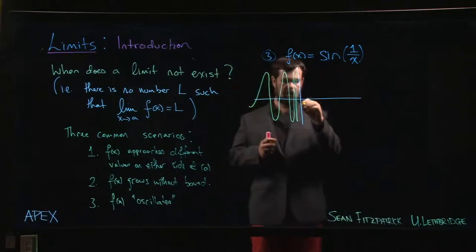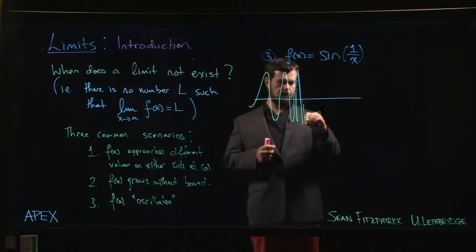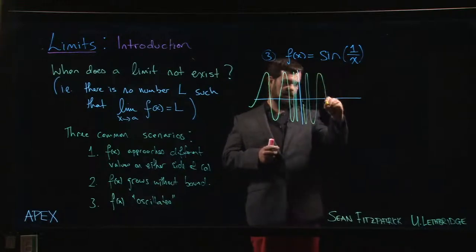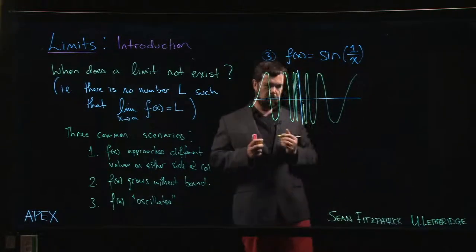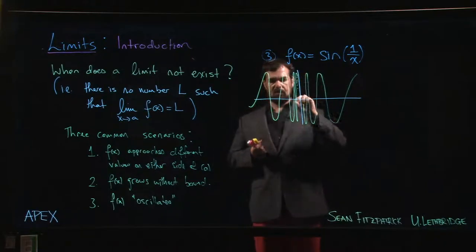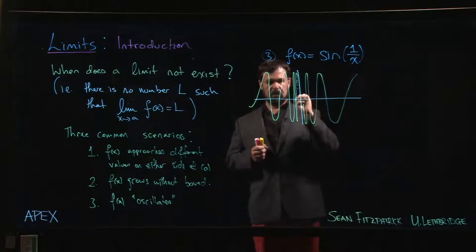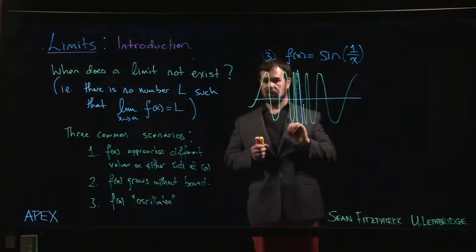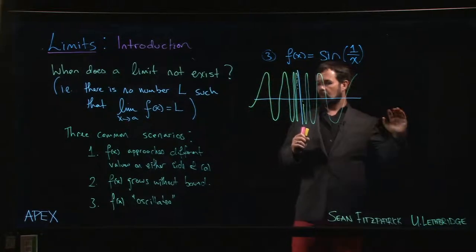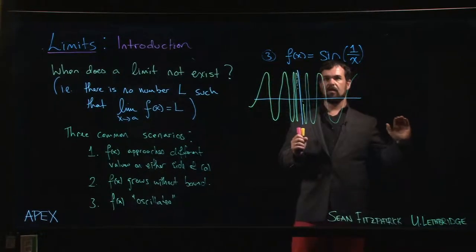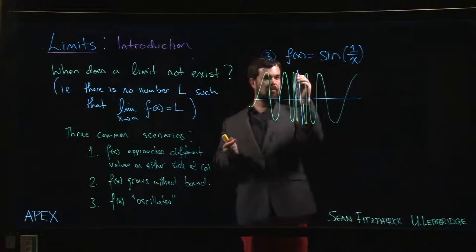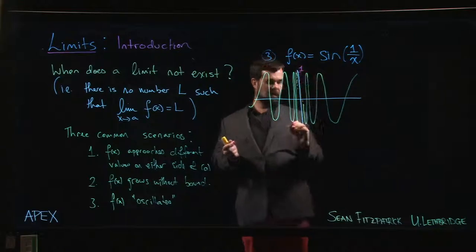Until you almost can't draw them anymore, and then they start settling down again. So you get a graph that looks something like this. You'll notice if you plot this on a computer and zoom in, it behaves really badly near zero. It's going all over the place. There's no limiting value that you can choose or assign here.